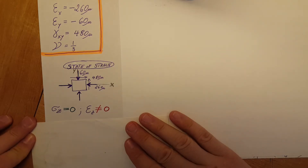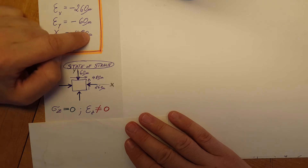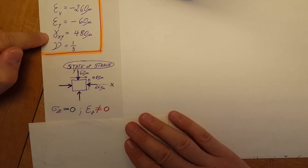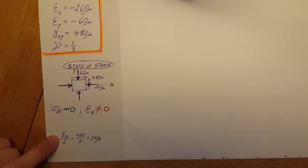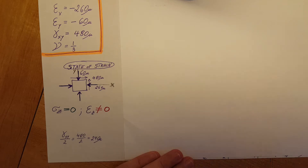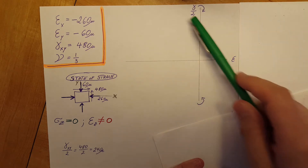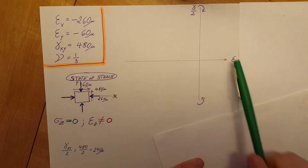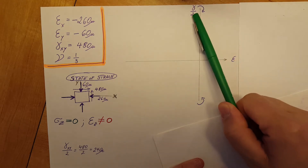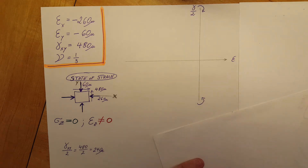Since we're going to be doing calculations with Mohr's circle, the first thing I like to do is take care of our shear strain, which is 480. But when working in Mohr's circle we need half of this, so I always divide it right away by 2 to get 240 microns, so I won't forget it when drawing the circle. Here is my axis for Mohr's circle for strain: epsilon on the horizontal and shearing strain divided by 2 on the vertical.